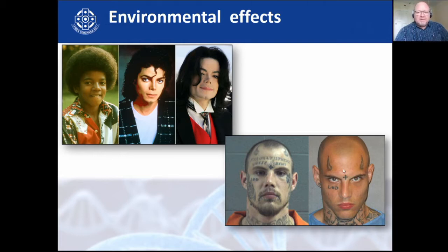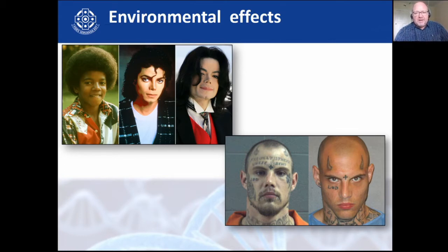Here we have two identical twins from Australia — unfortunately one has passed away, killed by police. But it's a brilliant example of how twins can be identical when little, yet as they get older, due to environmental effects, they look more and more different. You might say this is all artificial — so how can nature and the environment actually have an effect on the phenotype?